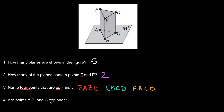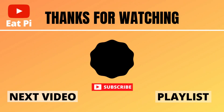Number four asks: are points A, B, and C coplanar? A, B, and C are right there, and as you can see they're all on the same side of the triangular prism. So yes, A, B, and C are coplanar! If you found the video helpful, leave a thumbs up below. If you have any questions or want to see more examples, let me know in the comments. Check out the playlists attached, and I'll see you there.